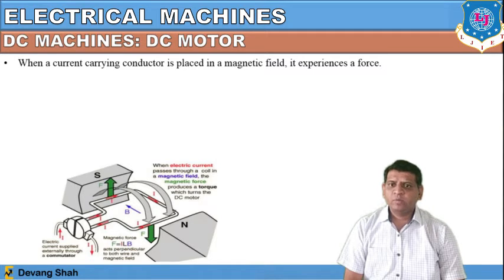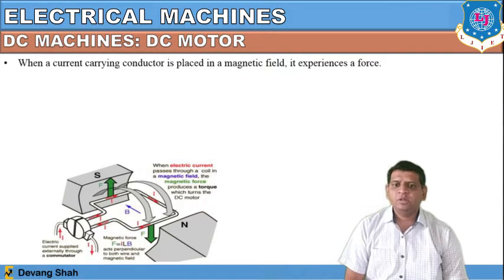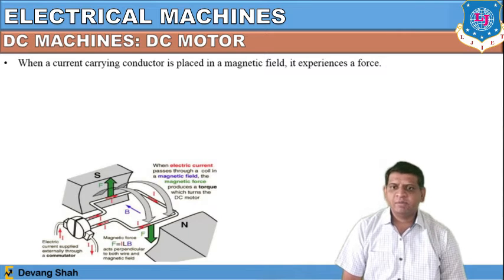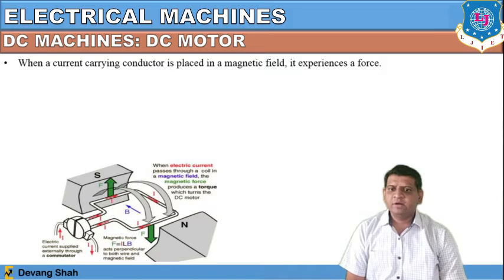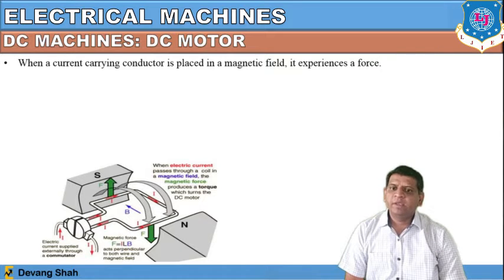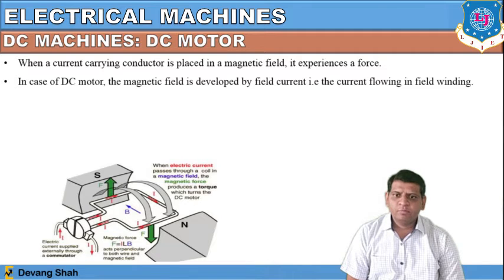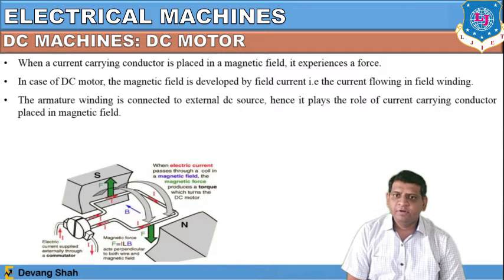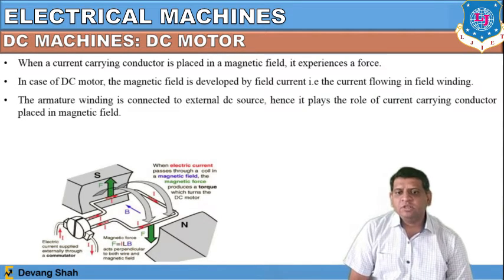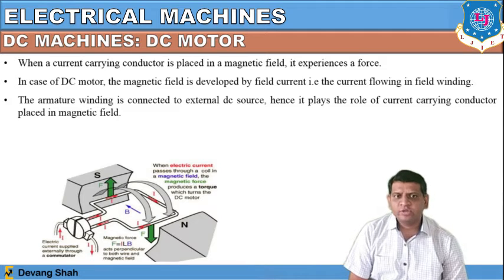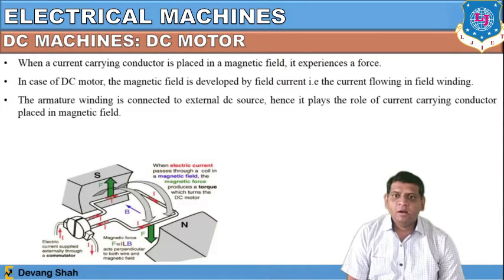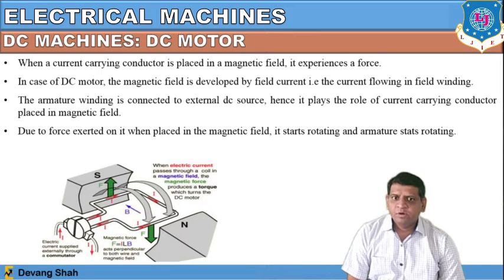The armature winding continuously rotates in a clockwise direction. Once the current-carrying conductor is placed in a magnetic field, it experiences a force — this is the same principle we discussed during the three-phase induction motor regarding the rotating magnetic field. A force is exerted on the conductor carrying current, and that force converts into mechanical energy. In this DC motor, the magnetic field is developed by the field current, the armature winding is connected to an external DC source, and due to this force exertion, the armature starts rotating.